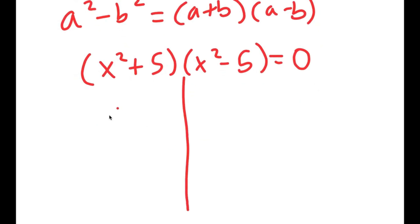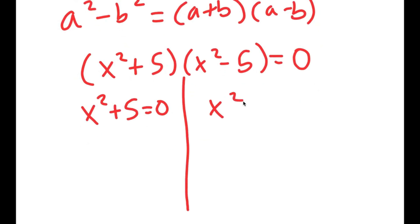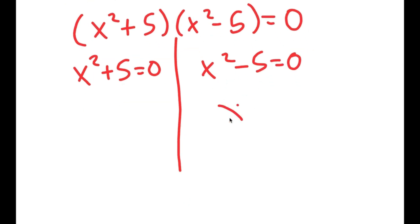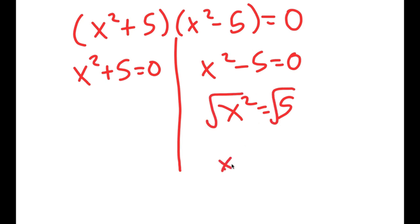So I get two equations: x squared plus 5 equals 0, and x squared minus 5 equals 0. For x squared minus 5 equals 0, I get x squared equals 5. Taking the square root on both sides, I get x is equal to positive or negative square root of 5.